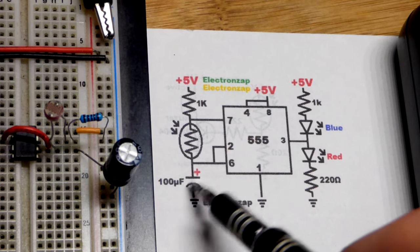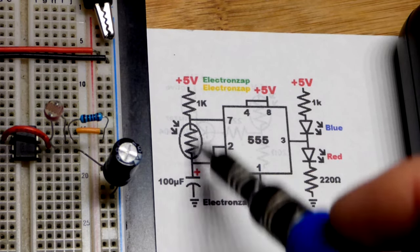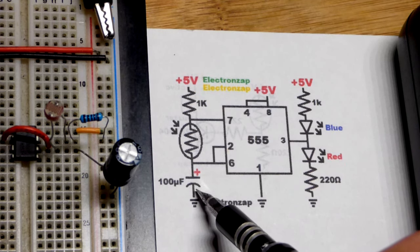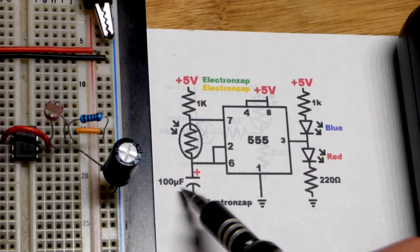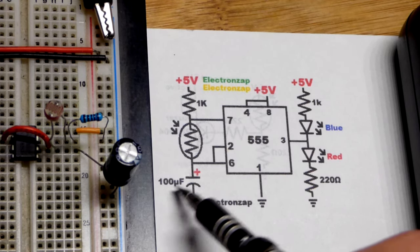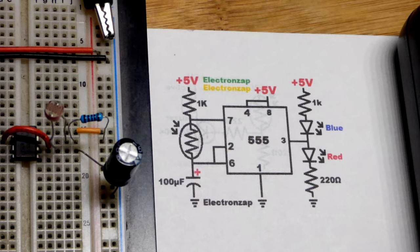Capacitors don't come in as many values as resistors, for the most part. So usually adjusting the resistance is easier, but you can do quite a bit just by swapping capacitors as well.